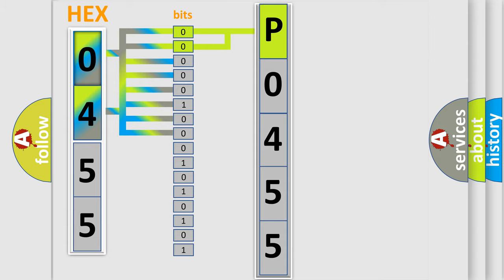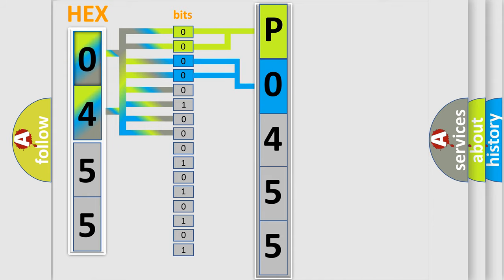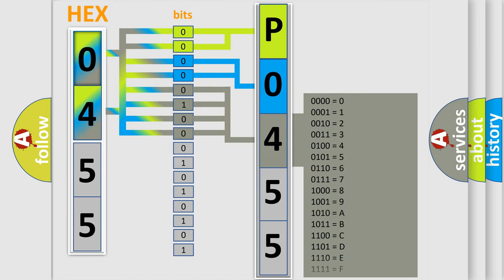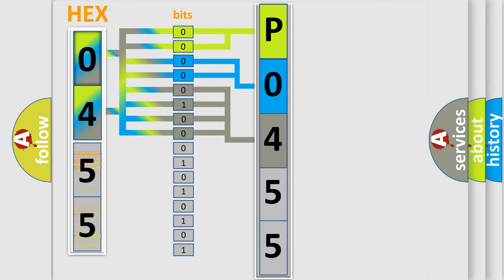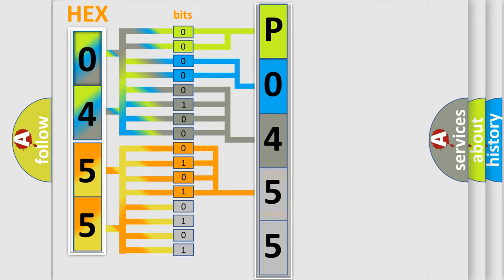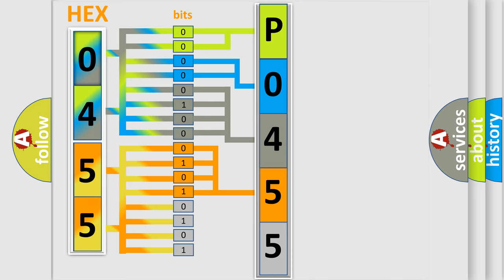The next two bits determine the second character. The last four bits of the first byte define the third character of the code. The second byte is composed of a combination of eight bits. The first four bits determine the fourth character of the code, and the combination of the last four bits defines the fifth character. A single byte conceals 256 possible combinations.